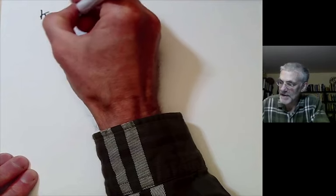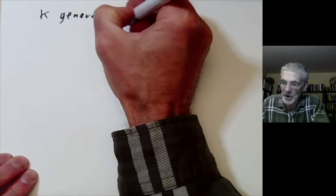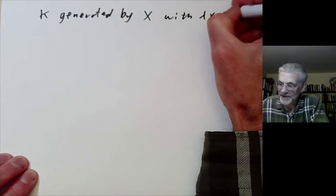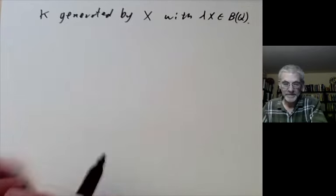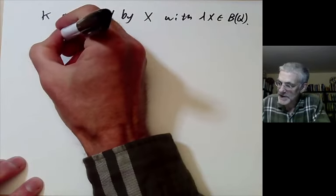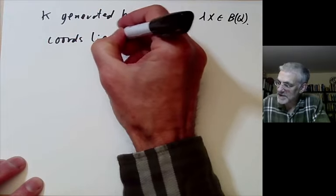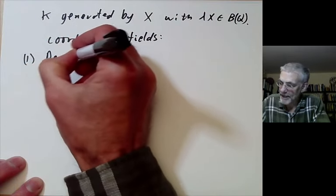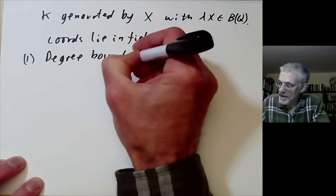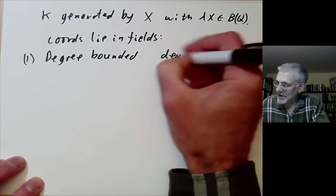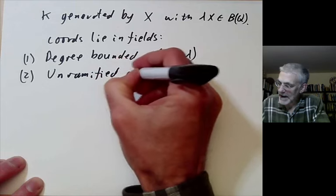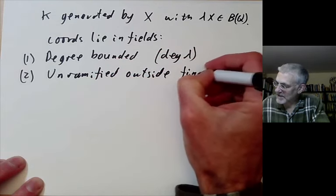What we've done is we've reduced our problem to the following. K is generated by the coordinates of points x with lambda x having rational coordinates. These coordinates lie in fields with the following properties. First, the degree is bounded. You can bound it in terms of the degree of lambda. Secondly, you can check that it's unramified outside a finite set of primes.